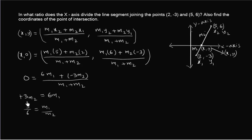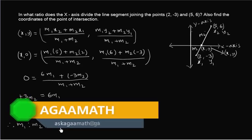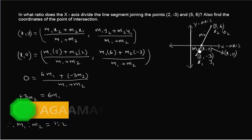Therefore, simplifying 3 by 6, the ratio m1 is to m2 equals 1 is to 2. So we have found that the x-axis divides the line segment in the ratio 1 is to 2. Now we also have to find the coordinates of the point of intersection.